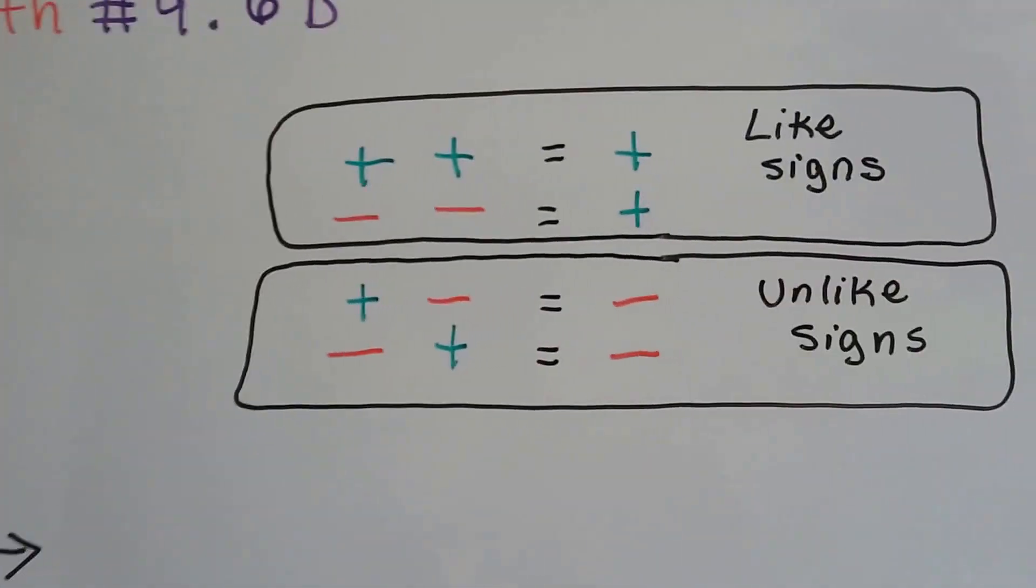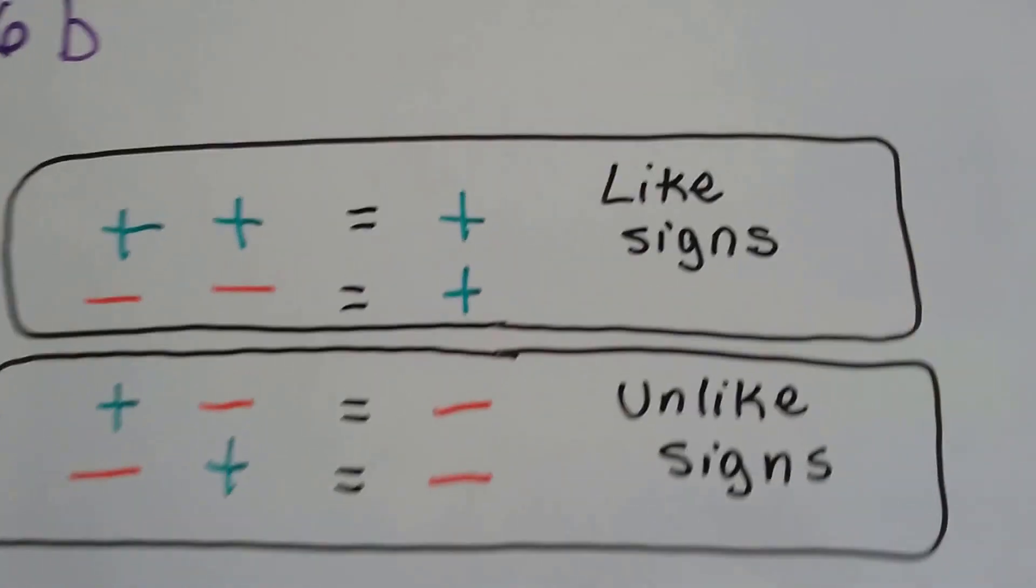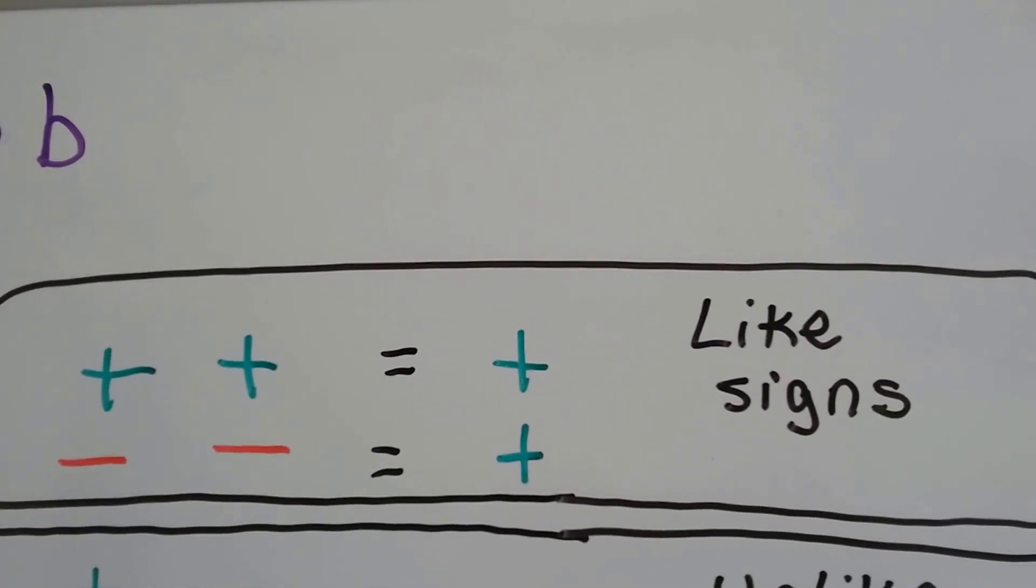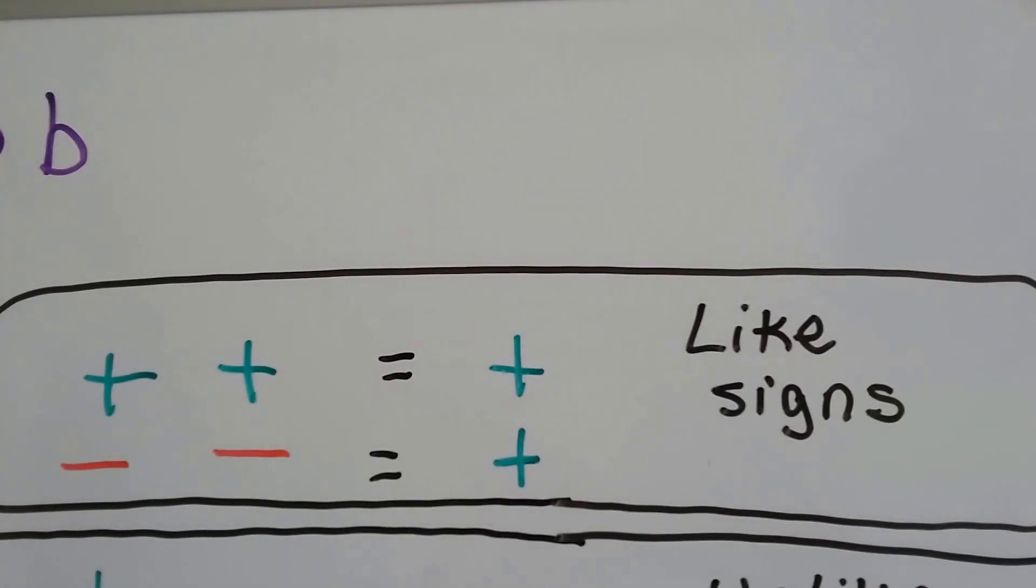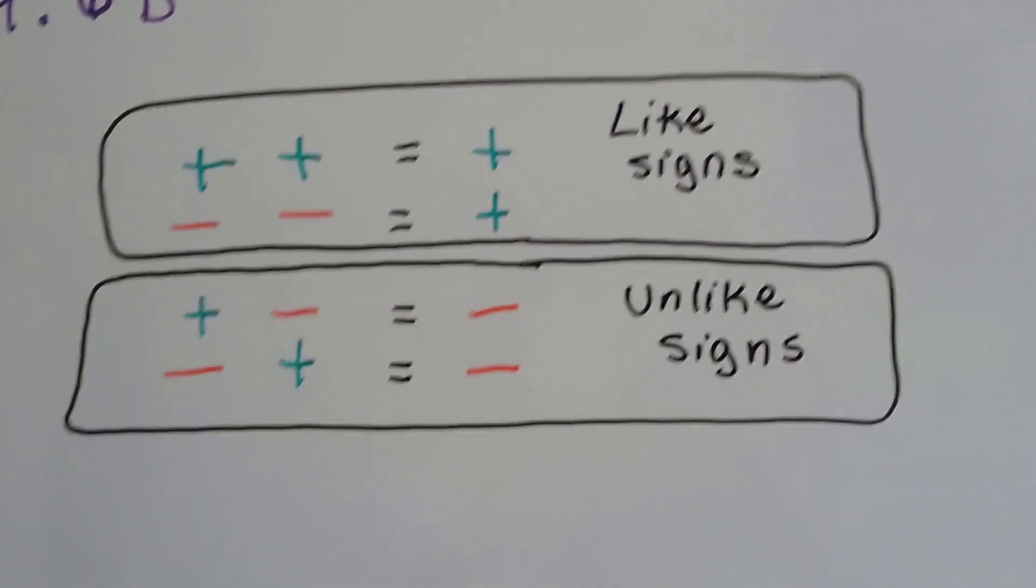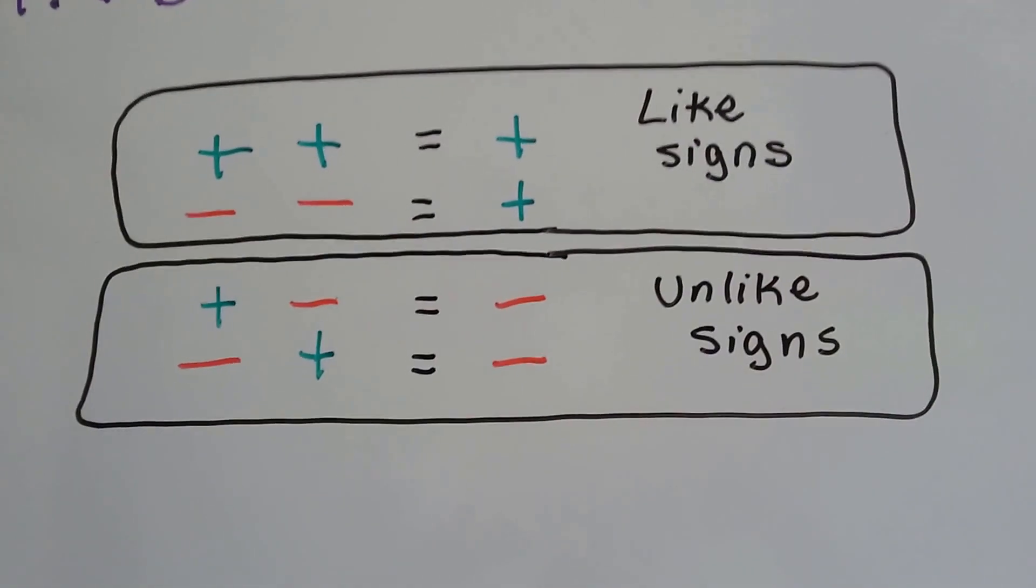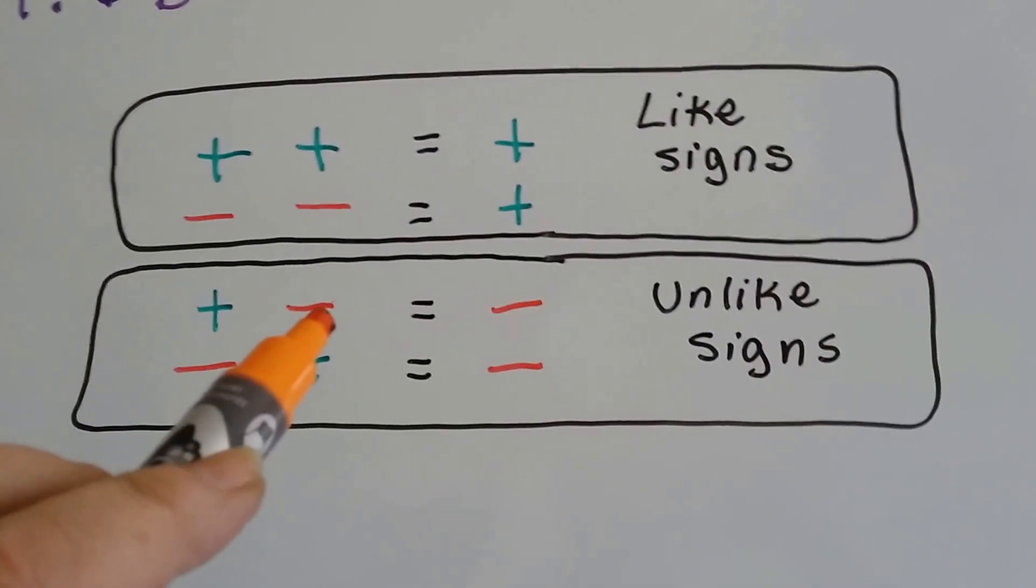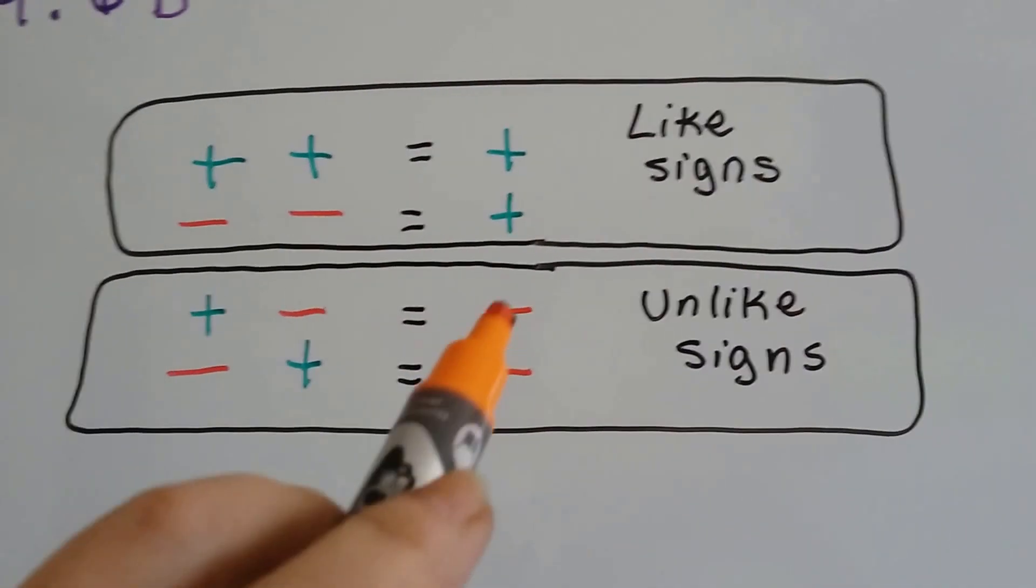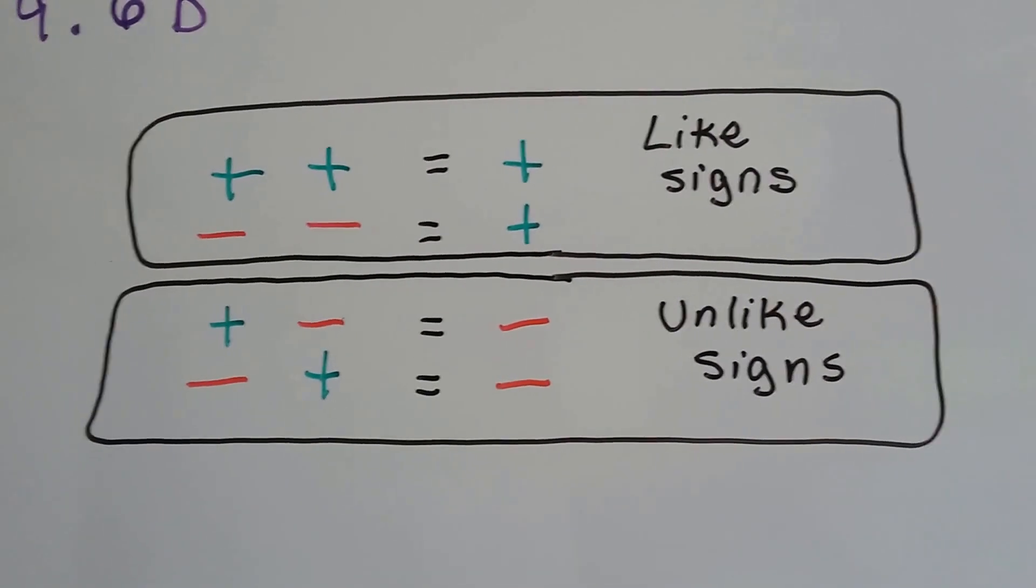Alright, so it's negative times a negative. What's going on? Well, there's a thing called like signs, which are these up here. When you have two positives, it's going to equal a positive. And when you have two negatives, it's going to equal a positive. So when we multiply two negative numbers together, it's going to be a positive answer. When we multiply a positive and a negative, or a negative and a positive, those are unlike signs and we're always going to get a negative answer. Now don't worry, I'm going to explain to you why.